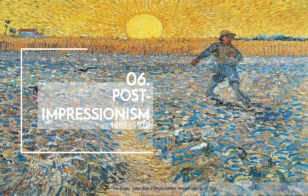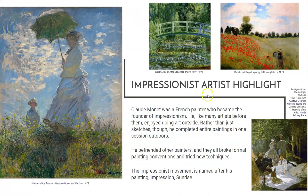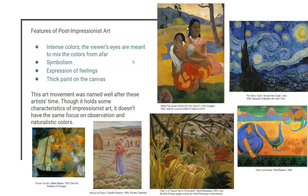Post-Impressionism spans 1885 to 1910. This is a painting called The Sower by Vincent van Gogh. Post-Impressionist art includes intense colors where the viewer's eyes are meant to mix the colors from afar. It takes some ideas from Impressionism — visible brush strokes, nothing perfectly smooth — but takes things in a different direction. Rather than capturing the effects of light, they were trying for other effects, wanting an interactive experience where from far away you can see what the painting means, but up close you may just see blobs or dots. Post-Impressionism also uses a lot of symbolism and expression of feelings, with thick paint on the canvas.